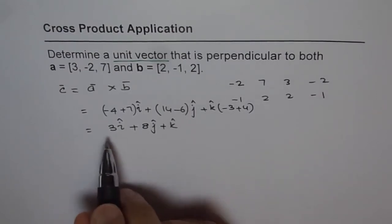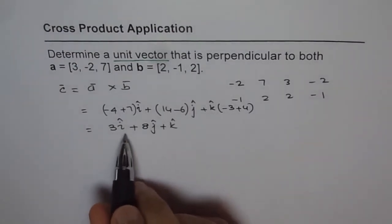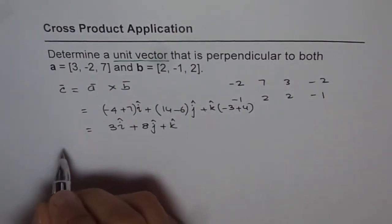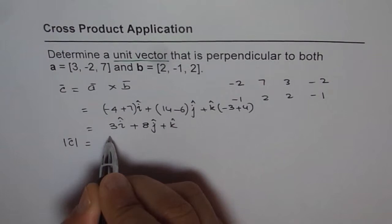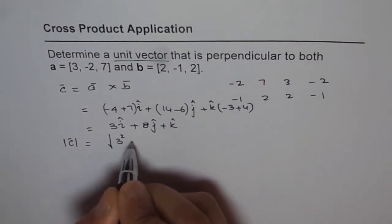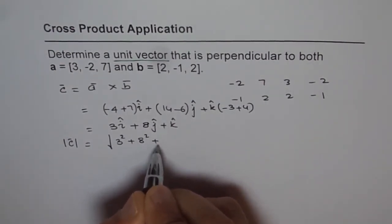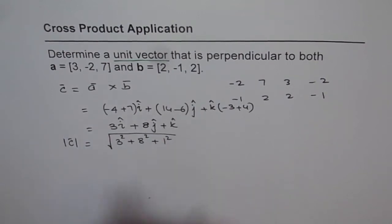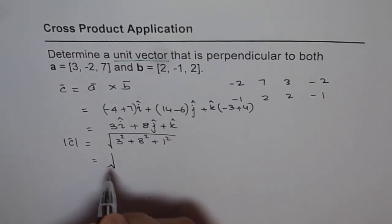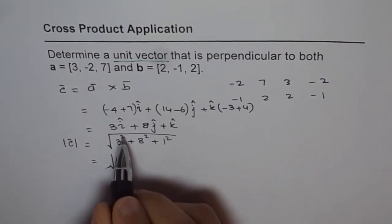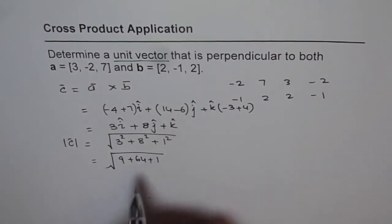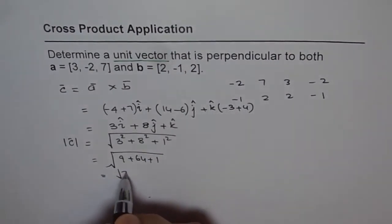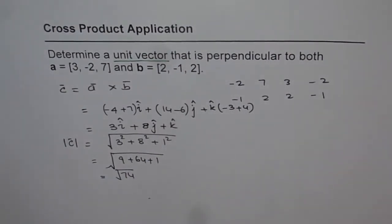To find unit vector C, we have to divide it by the magnitude of C. So what is the magnitude of C? Now find magnitude of C. Magnitude will be 3 squared plus 8 squared plus 1 squared. Now this is equal to square root of, now 3 squared is 9, 8 squared is 64 plus 1. So 10 plus 64 is square root of 74. So that is what it is.